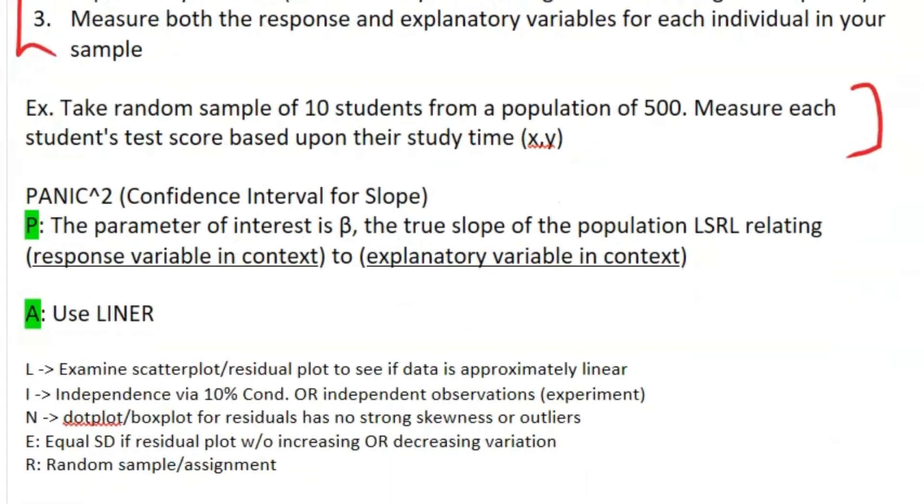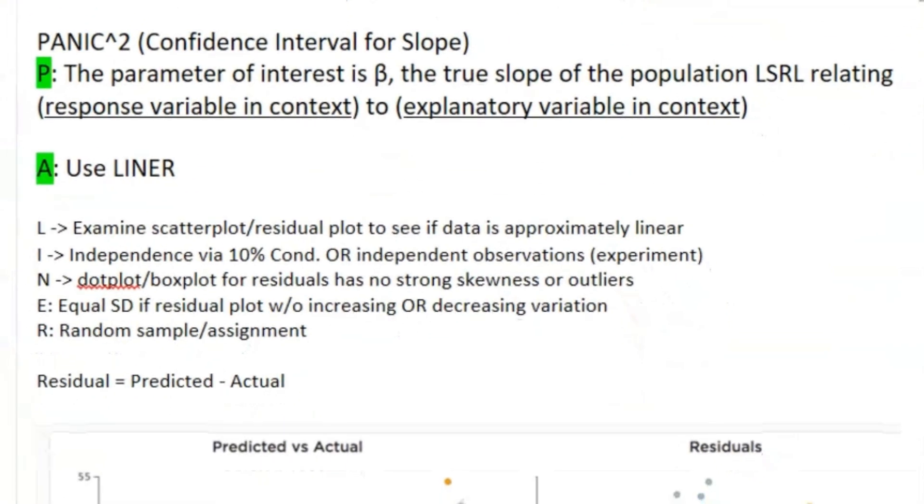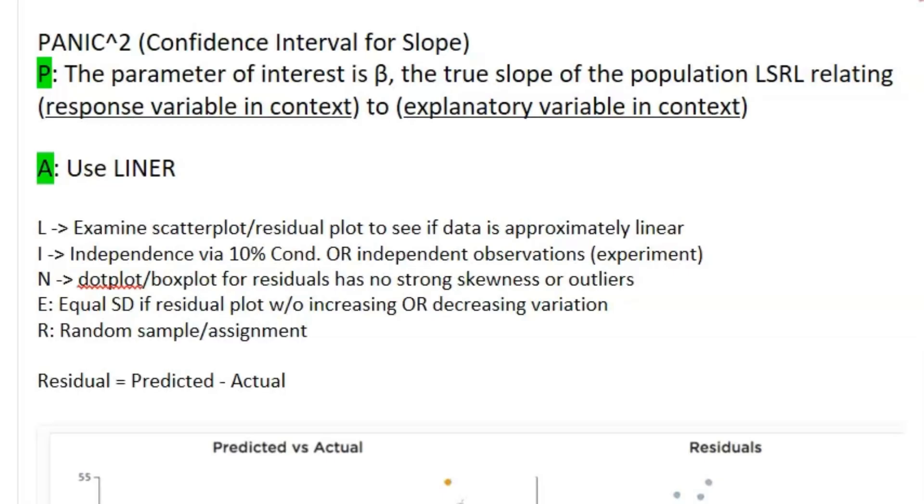You need to actually do a detailed procedure using a p-value or confidence interval. So let's dive into it. Confidence interval, PANICc² - same thing as before. P, your parameter of interest in this case is β, the true slope of the population least squares regression line, and then just talk about your two variables in context that you're trying to see if there's a linear relationship between those two.